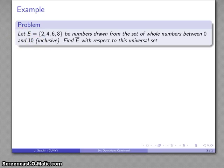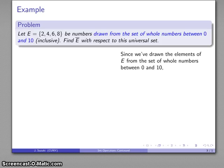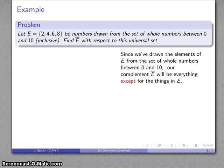Where did these numbers come from? They came from the set of whole numbers between 0 and 10. And I want to find the complement of E with respect to this universal set. Since I've drawn the elements of E from the set of whole numbers between 0 and 10, our complement will be everything except for what's already in E.